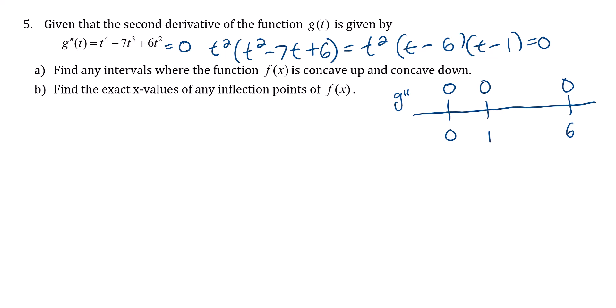As we make this sign chart, we need to check numbers on each of these intervals to determine if the second derivative is positive or negative there. Let's start with negative 1. The t squared is always positive. If I put negative 1 in, this next factor will be negative. Negative 1 for t minus 1 would make that also negative. So positive times negative times negative will be positive.